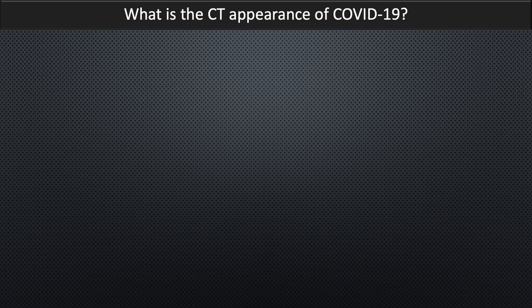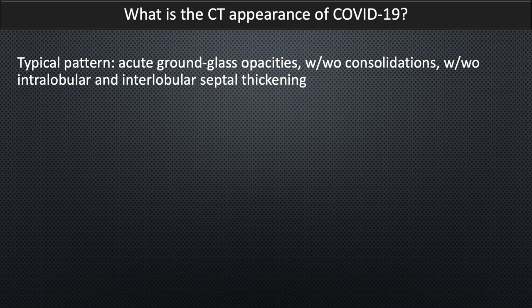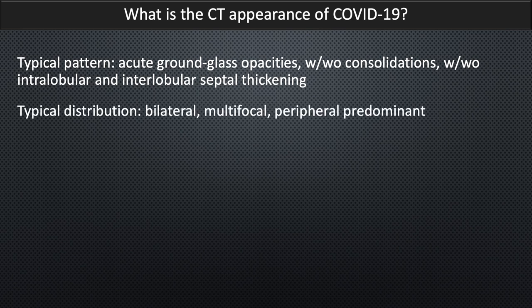What is the CT appearance of COVID-19? Typical patterns include acute ground glass opacities, with or without consolidations, with or without intralobular and interlobular septal thickening. The distribution matters. A typical distribution is bilateral, multifocal, and oftentimes peripheral predominant.